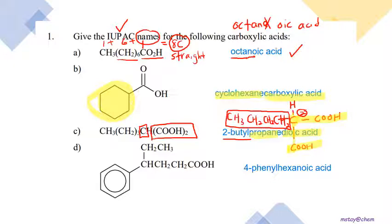For question 1d, counting from the COOH: carbon one, two, three, four — we cannot include the benzene ring as part of a straight chain parent. So we continue up to carbon five and six. The longest chain has six carbons, giving hexanoic acid as the parent.